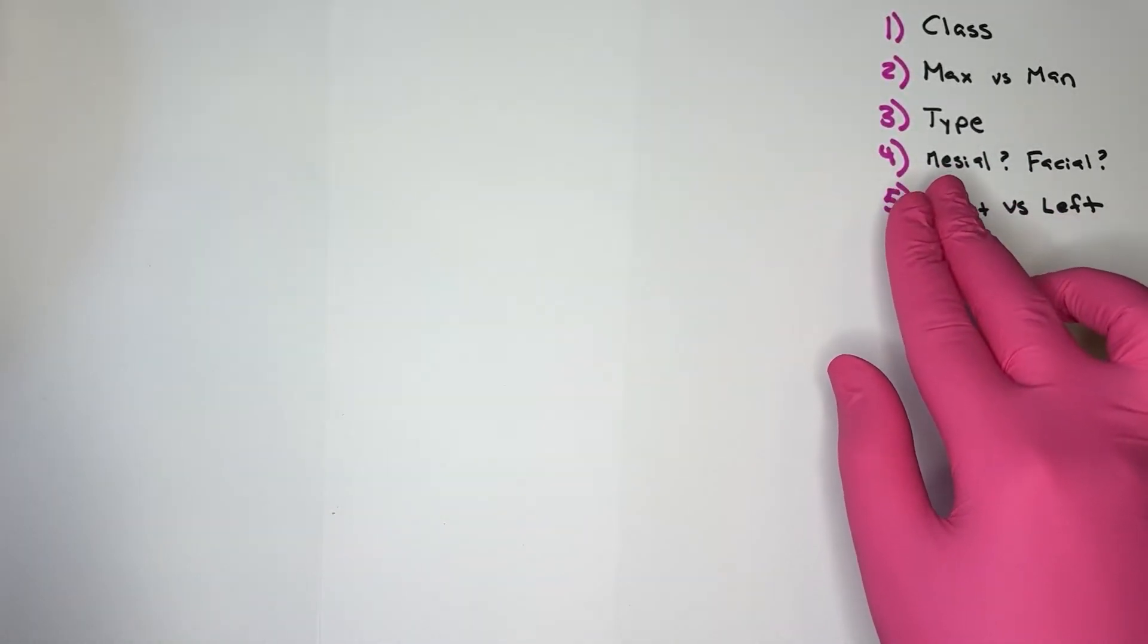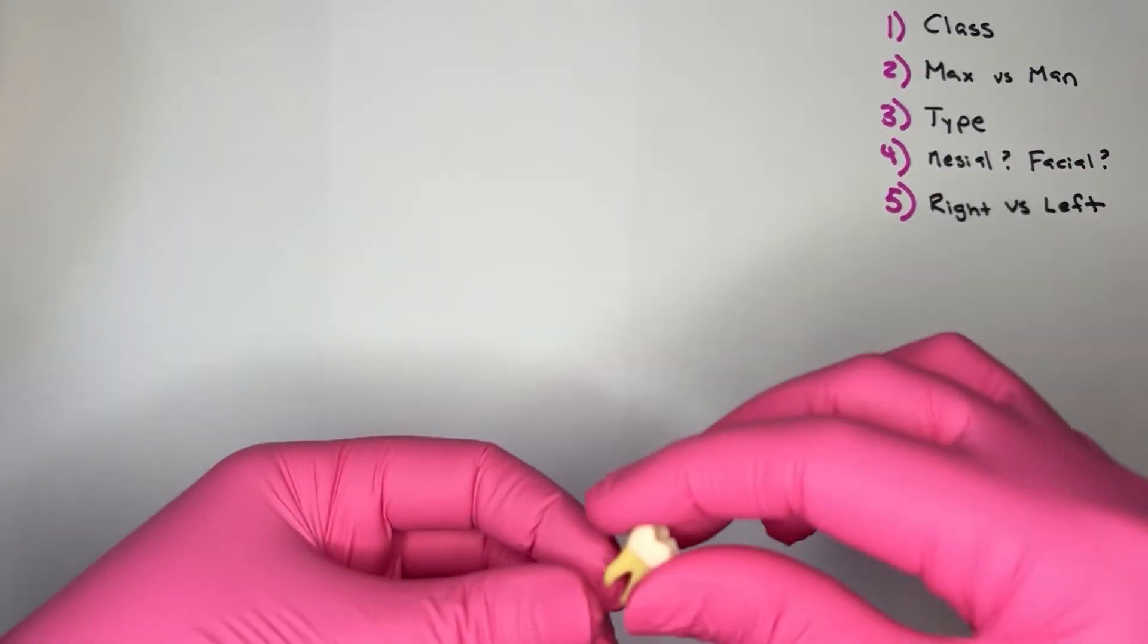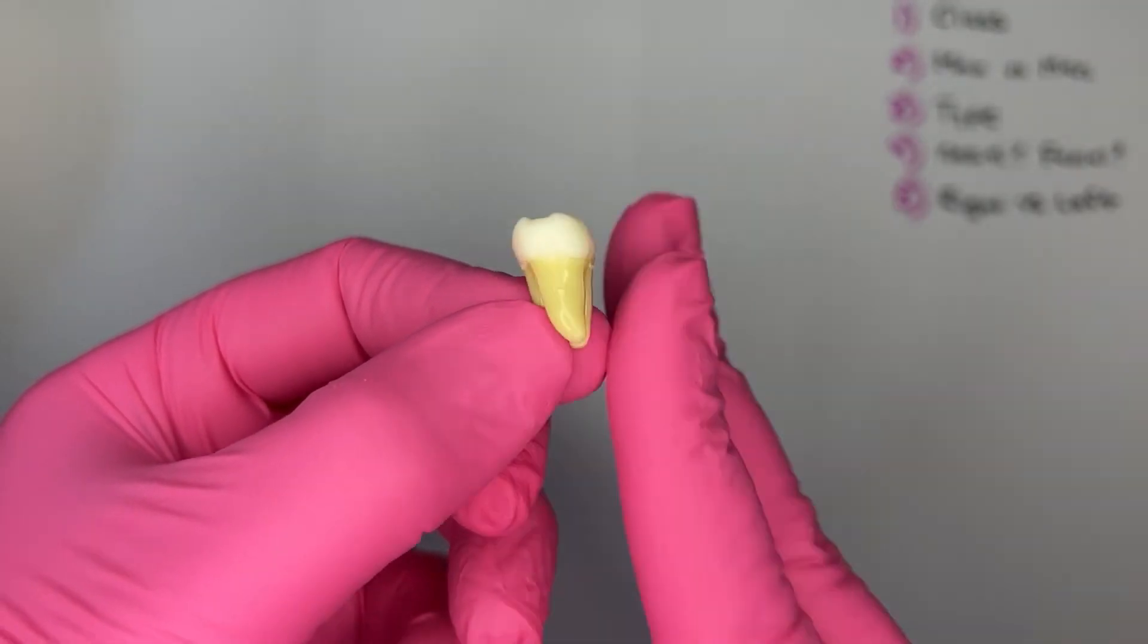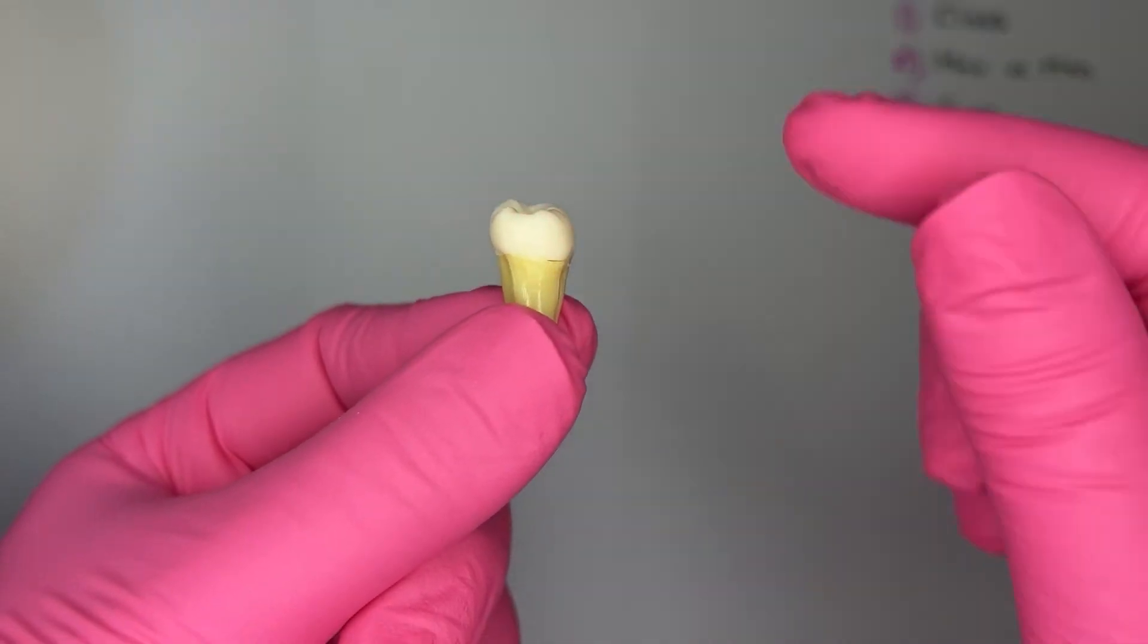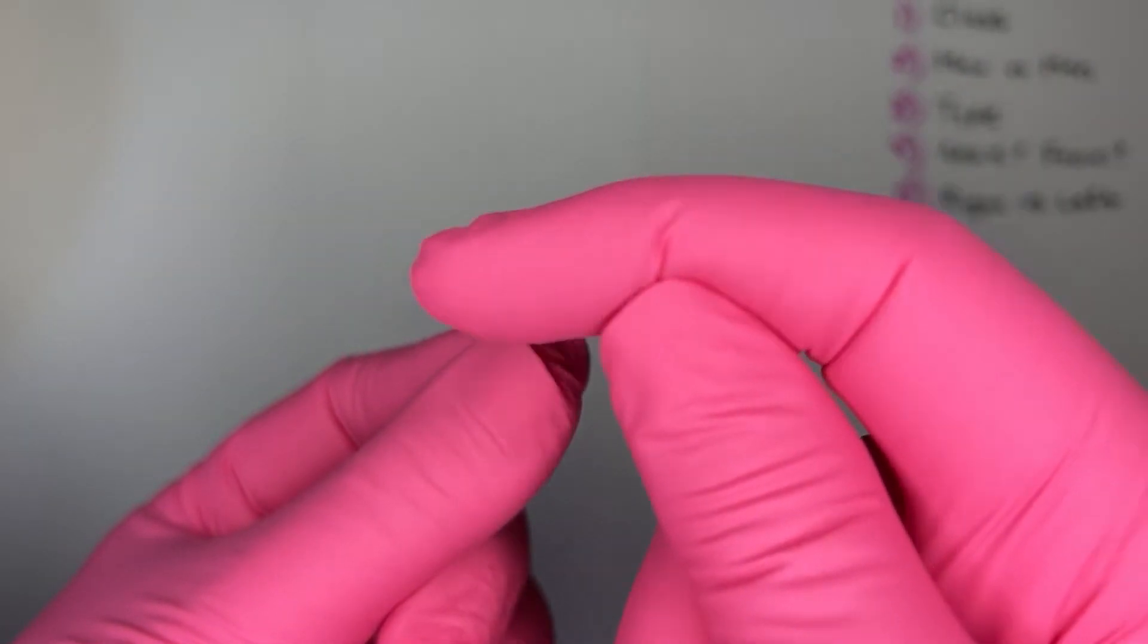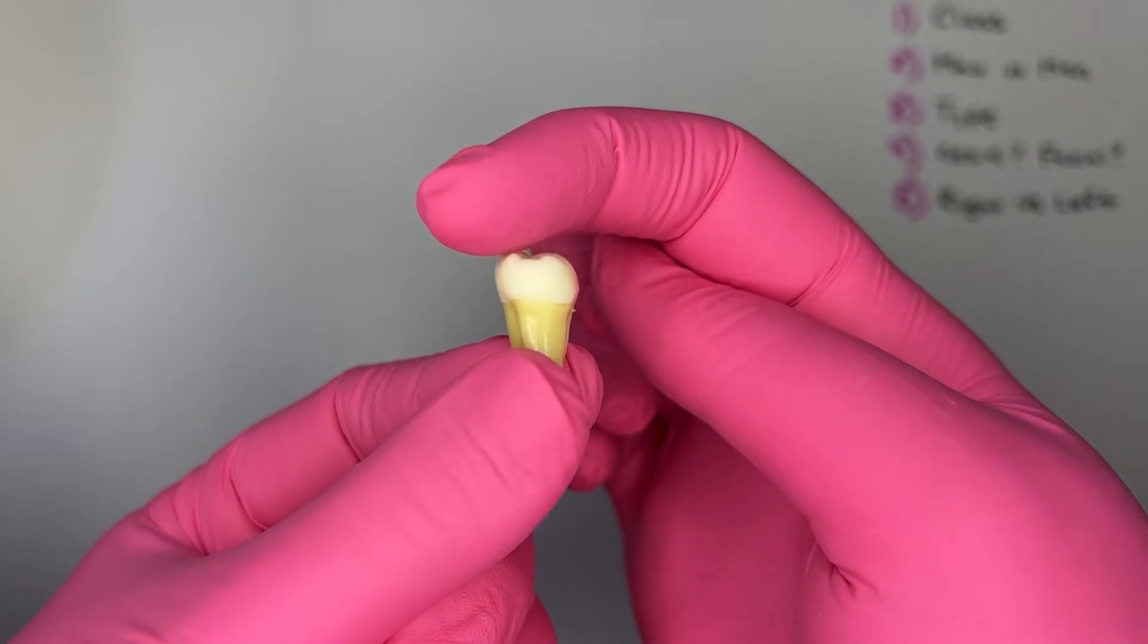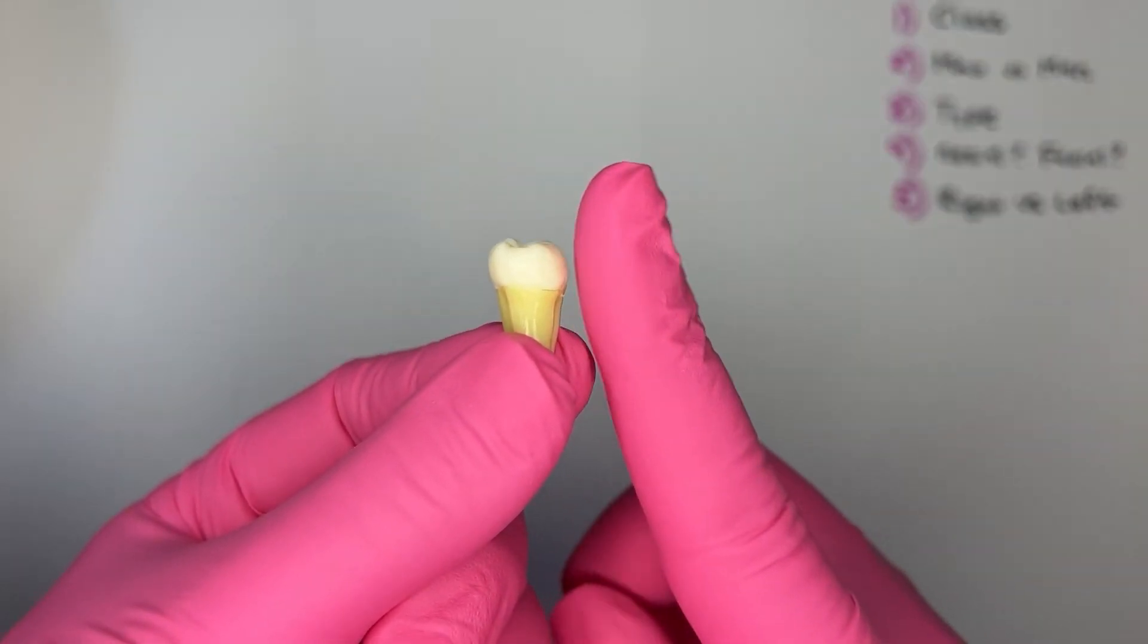Step number four, determine mesial versus distal, facial versus lingual. Holding this tooth and looking at it from the proximal, so in the direction where the roots overlap each other, I see that the crown is tilting to one side. It's tilting this way, to this side. And the cusps on this side are smaller and pointier. So I know that this side is the lingual and this side is the facial.